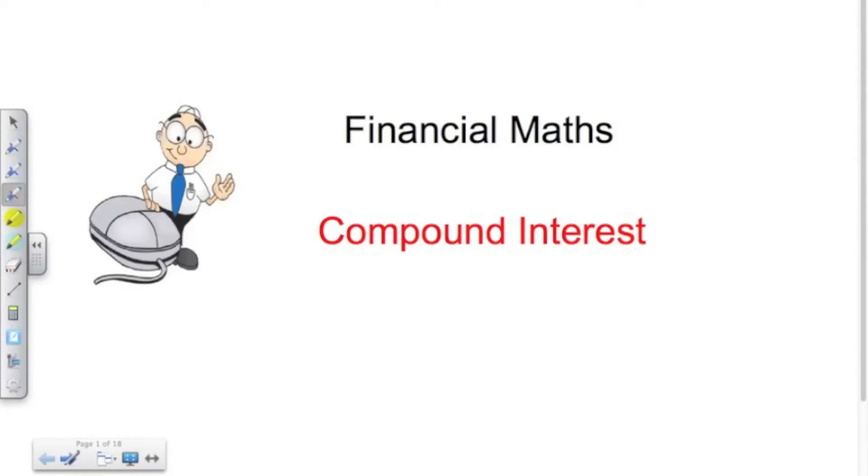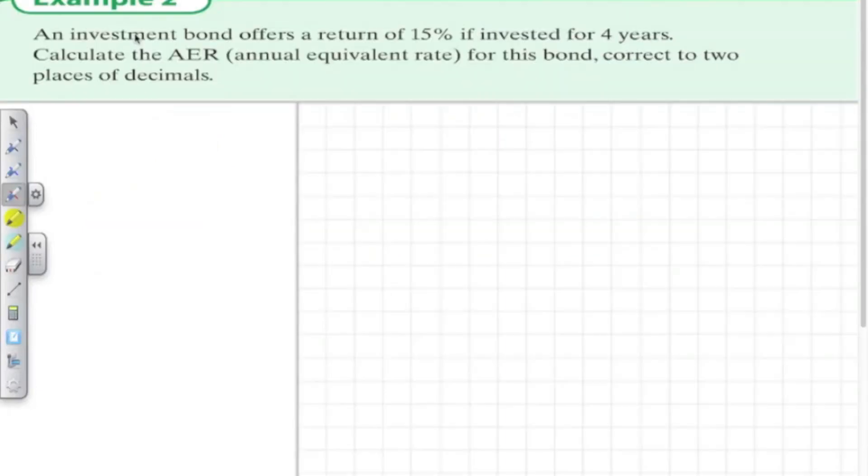Financial maths example two, compound interest. An investment bond offers 15% if invested for four years. Calculate the annual equivalent rate.